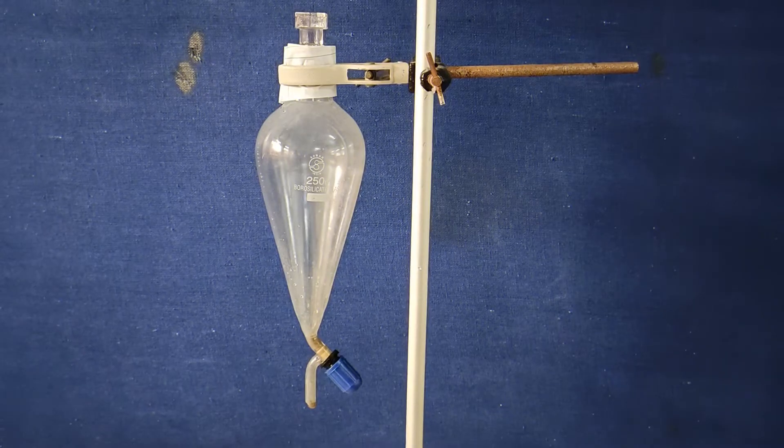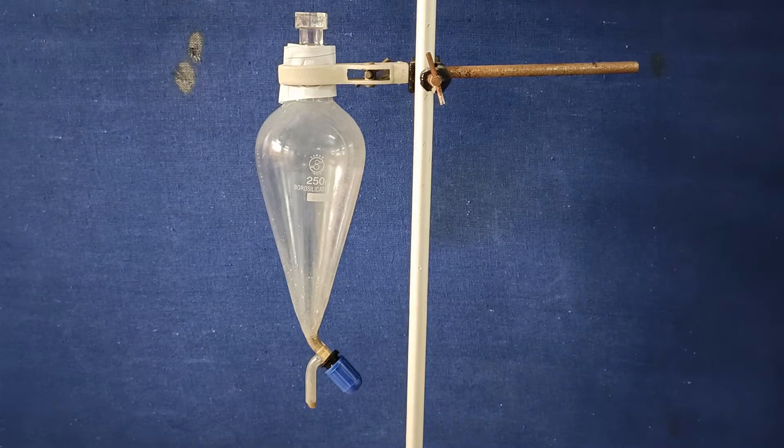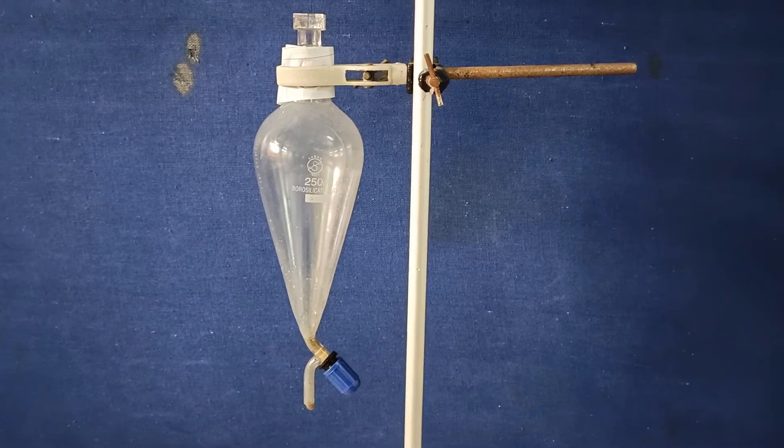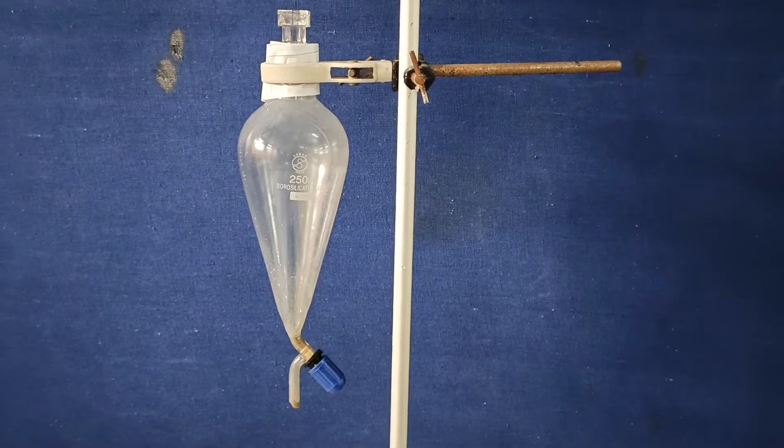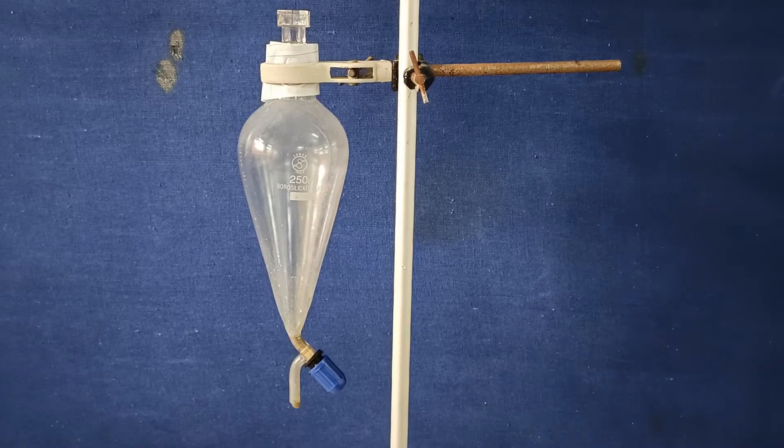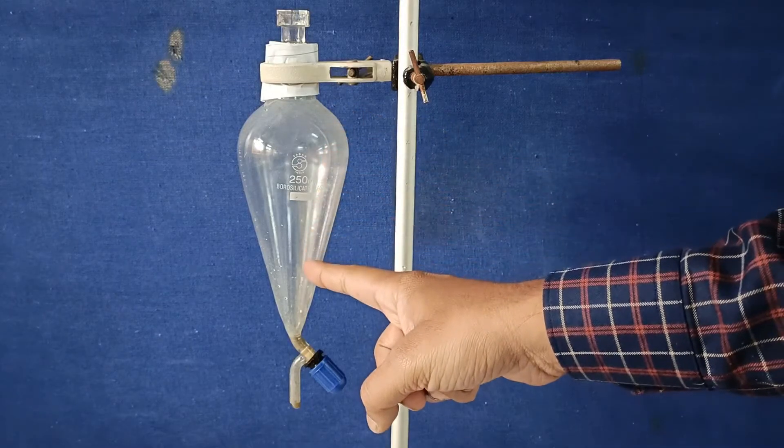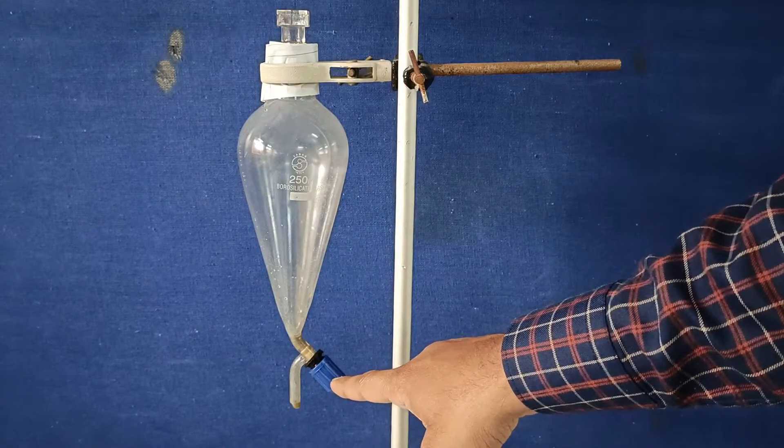Hello everyone, welcome to Make Me Scientific. A separating funnel is an apparatus made out of glass used to separate two immiscible liquids. The principle is the difference in densities of both the liquids. This is the stopcock with which the flow of liquid coming out can be controlled.